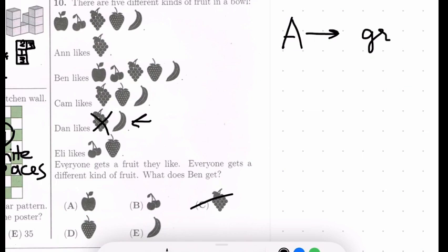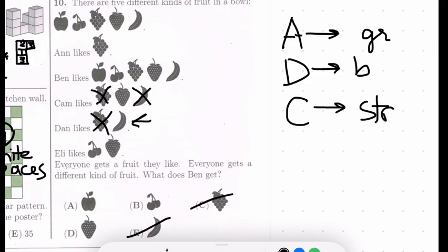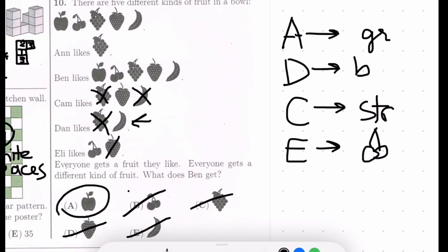Now look at Dan. If Anne got grapes, then there's only one other fruit that Dan likes, so that means Dan got bananas. And that means Ben also did not get bananas. Grapes and bananas are out of the question. Cam would only like strawberries, only one of her favorite fruits is left, so Cam got strawberries. Ben didn't get strawberries either. Eli likes cherries and strawberries, but Cam took the strawberries, so that means Eli likes cherries. That leaves Ben with apples. Grapes are gone, bananas are gone, strawberries are gone, cherries are gone. Only the apples are remaining. So the answer is A for problem number 10.